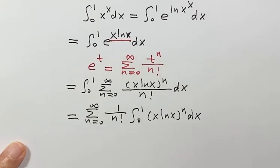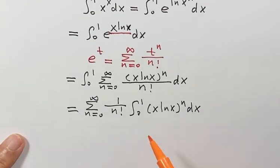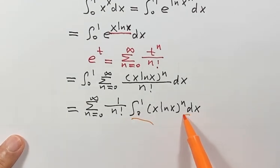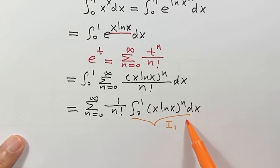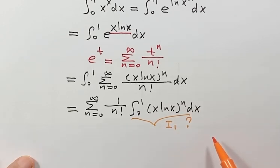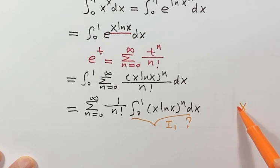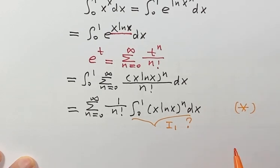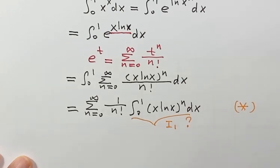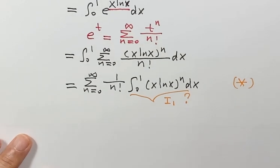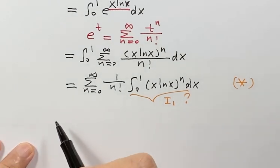So we can switch the integral and the sum, and move the n factorial outside the integral. Here we have 1 over n factorial times the integral of x log x to the power n dx. Let's label this integral I1. We need to figure out what I1 is, then put the answer back to this line.